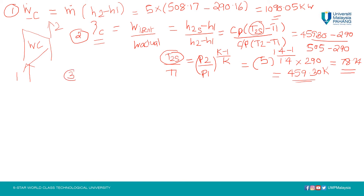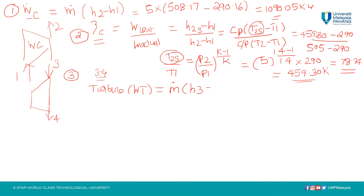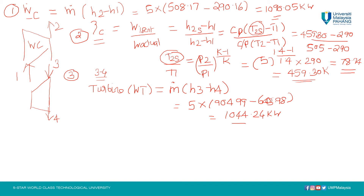Let us go to the turbine part. In the turbine section, the inlet is condition 3 and the outlet is condition 4, so 3 to 4 is the turbine expansion. The work done by the turbine is Wt = m-dot into (h3 minus h4). Substituting the values: 5 into (904.99 minus 643.98) = 1044.24 kW. So we have the turbine work.